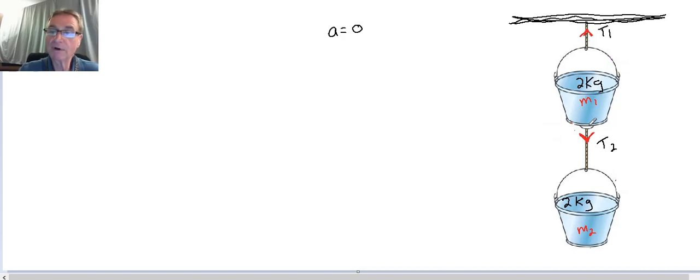What other forces do we have on M1? We have the gravity of the bucket itself. So force due to gravity, we'll call that one, which is equal to M1 times G. Do we have any other forces? I think we've taken care of all the forces on bucket M1.